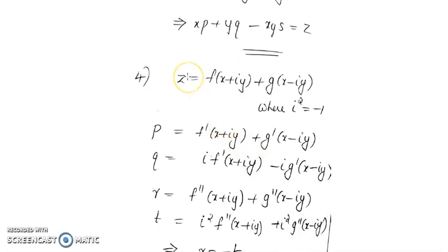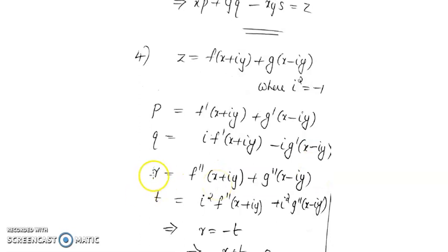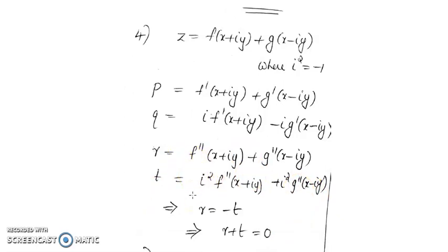The next example is z = f(x + iy) + g(x − iy), where i² = −1. Differentiating with respect to x gives p = f'(x+iy) + g'(x−iy). Differentiating with respect to y gives q = i·f'(x+iy) − i·g'(x−iy). Finding r and t: r = f''(x+iy) + g''(x−iy), and t = −f''(x+iy) − g''(x−iy), since i² = −1. Therefore r = −t, and the required PDE is r + t = 0.